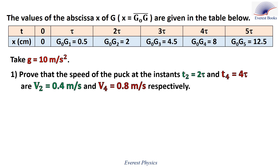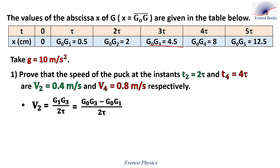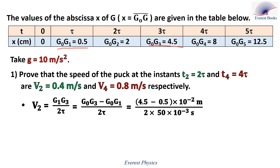Part 1: Prove that the speed of the puck at instances 2 tau and 4 tau are 0.4 m/s and 0.8 m/s respectively. Starting with V2: V2 equals the distance G1G3 over the time interval between these two points. G1G3 is not given in the table, but G1G3 equals G0G3 minus G0G1. G0G3 equals 4.5 cm and G0G1 equals 0.5 cm, so G1G3 equals 4.5 minus 0.5, multiplied by 10⁻² to convert to meters. With 2 tau equals 2 times 50 times 10⁻³ seconds, V2 equals 0.4 m/s.